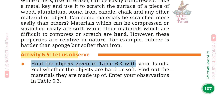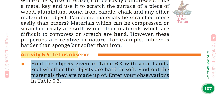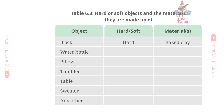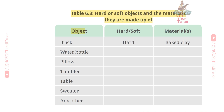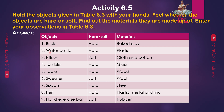Table 6.3 — Hard or Soft Objects and the Materials they are made up of. Column 1: Object, Column 2: Hard or Soft, Column 3: Materials. 1. Brick — Hard — Clay. 2. Water bottle — Hard — Plastic. 3. Pillow — Soft — Cloth and cotton.